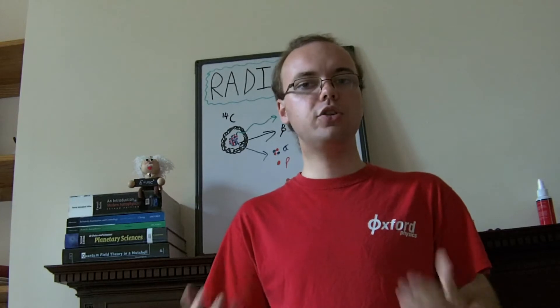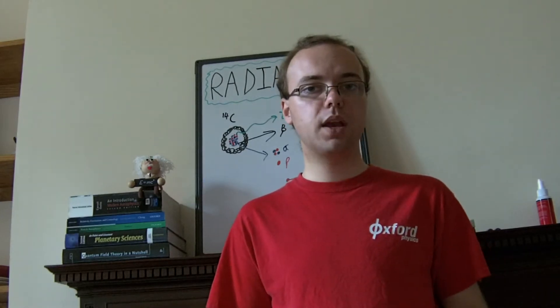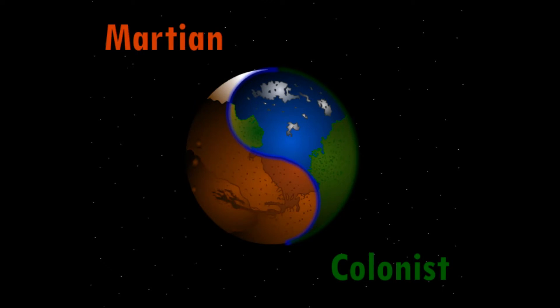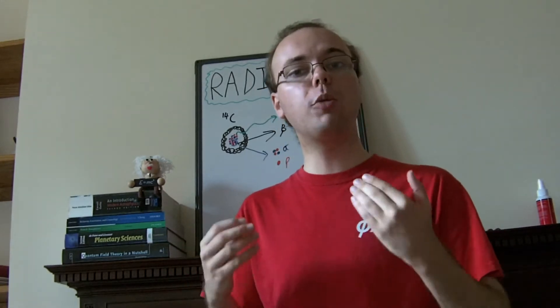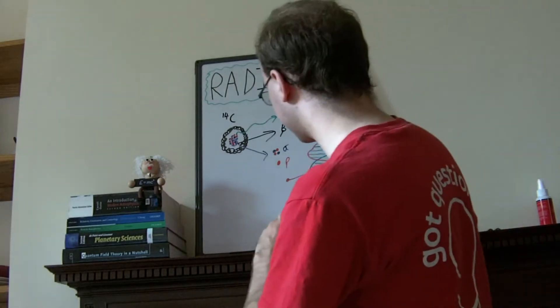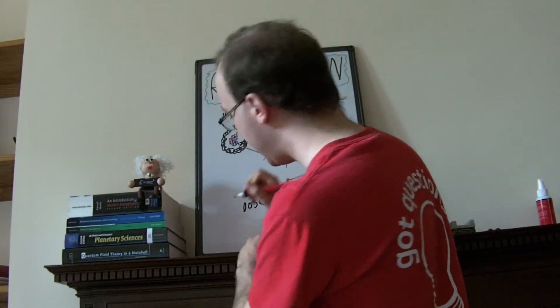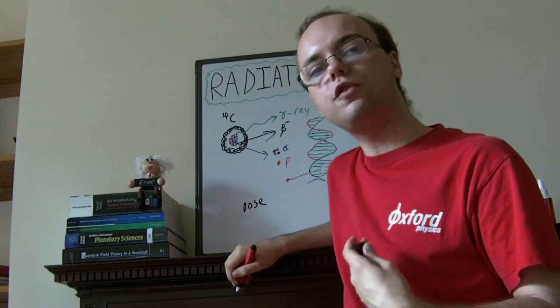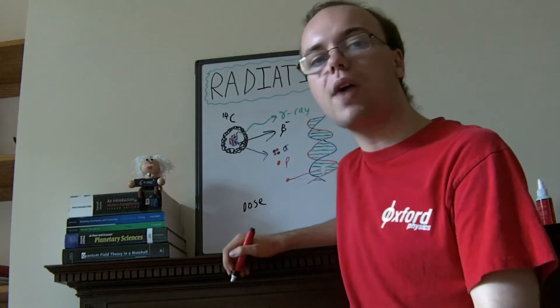But the discussion was quite qualitative and in order to get concrete we have to start putting some numbers to it and understand what a radioactive dose actually is. Firstly, we look at how much energy a particle deposits in our body per unit mass and we call this the absorbed dose. And this is measured in units of joules per kilogram, which is also known as the grey.